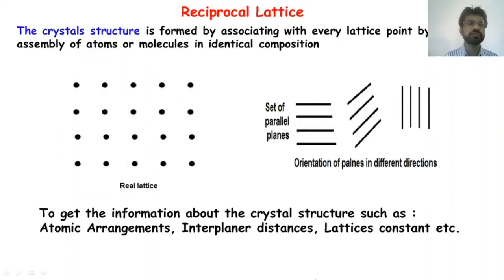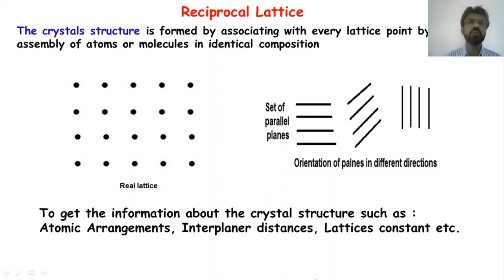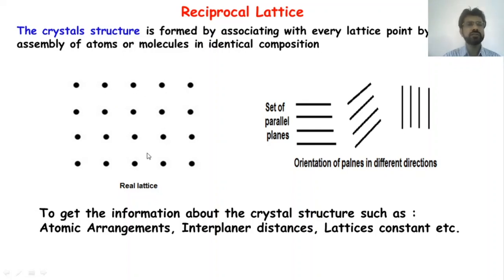In the first lecture we have seen about the lattice points, the basis, and the formation of the crystal structure. We have seen that the crystal structure is formed by associating with every lattice point a unit assembly of atoms or molecules in identical positions. Every atom is surrounded by identical atoms and its arrangement is periodic.